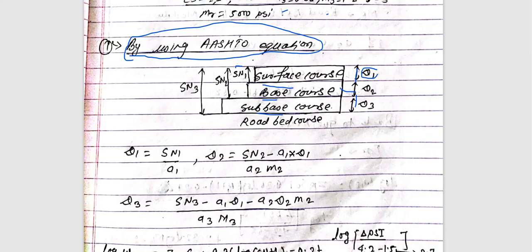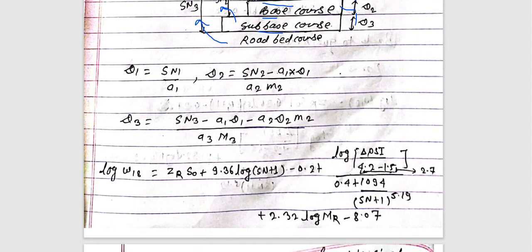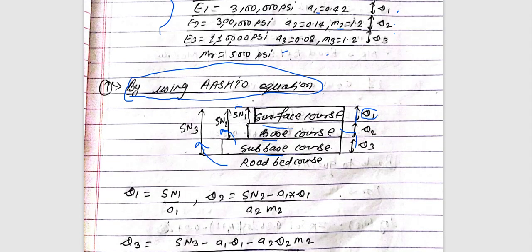We have d1, s1, d2, SN2 for the s1 base course, surface course, and base course layers.